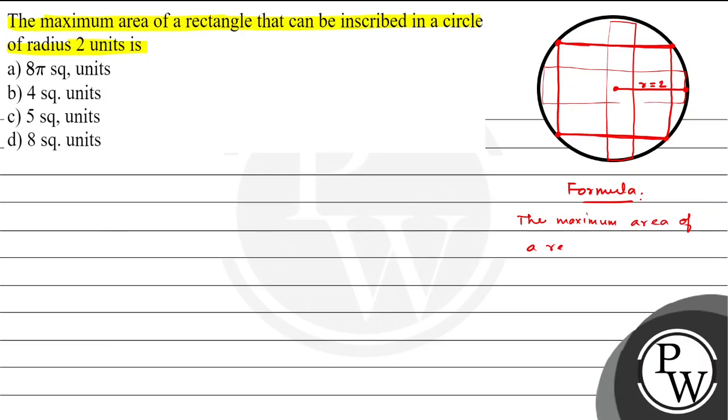The formula is: the maximum area of a rectangle that can be inscribed in a circle of radius r is A = 2r². Note that it's 2r², not 2πr². This is the formula for maximum area of a rectangle inscribed in a circle of radius r.